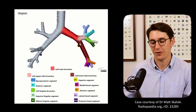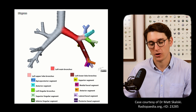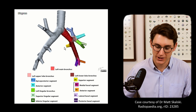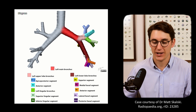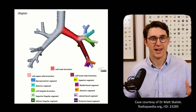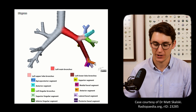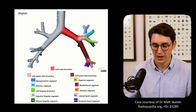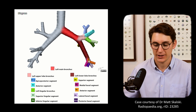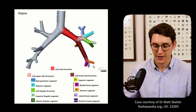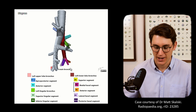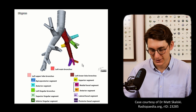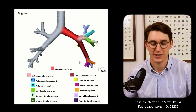The left lower lobe bronchus gives off a superior segment posteriorly quite early on, just like on the right. On the left side we also have four basal bronchi — medial, anterior, lateral, and posterior — but here the medial and anterior share a trunk, forming an anteromedial trunk, before the lateral and posterior come off. We'll see all of this much more clearly on the CT scan.